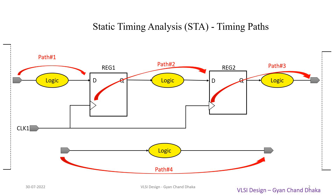If we provide the circuit netlist of this circuit — whatever you see on the screen — to the STA tool, what the STA tool is going to do first is break this design into four types of timing paths. Let's understand each path in detail. The first path the STA tool will consider for analysis is from the input pin of the design to the data pin of the sequential element. We are going to see the different kinds of checks the STA tool will perform to analyze this path in our next video.